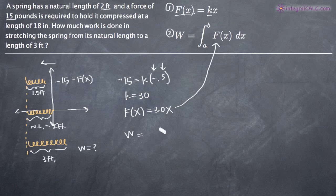So the work done to expand the spring from a natural length of 2 feet to a length of 3 feet means that we need to expand the spring by 1 foot, because we go from 2 feet to 3 feet. So we're going to integrate from 0 to 1.